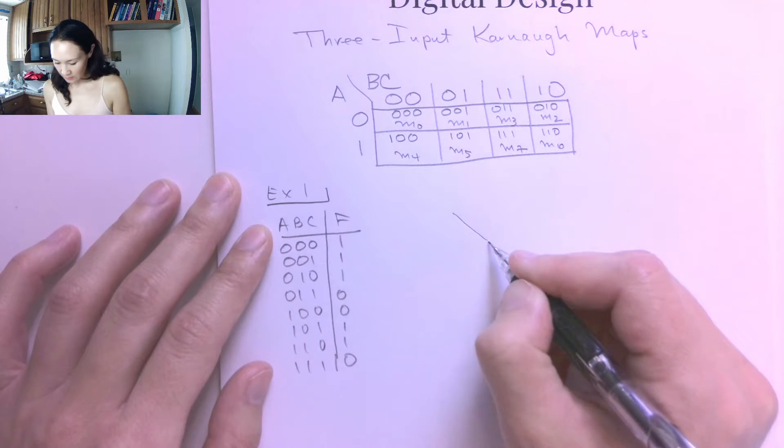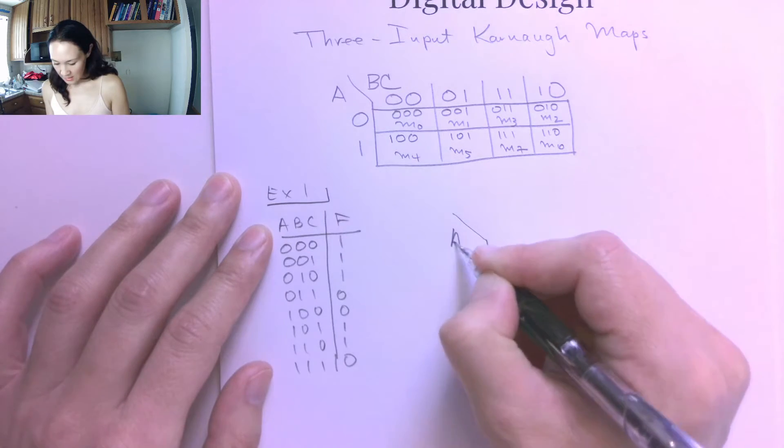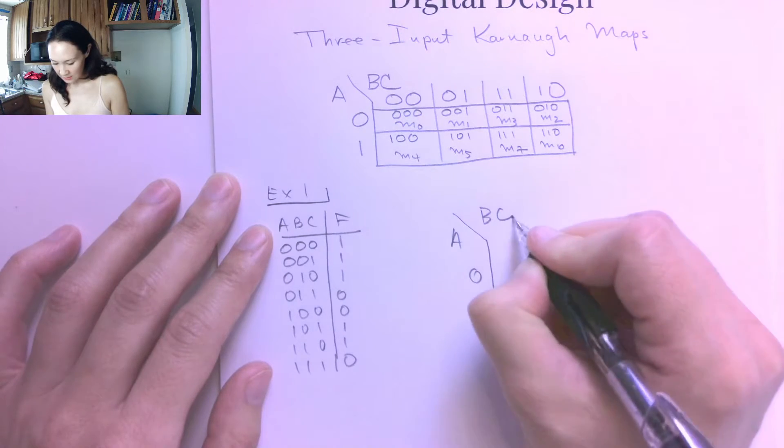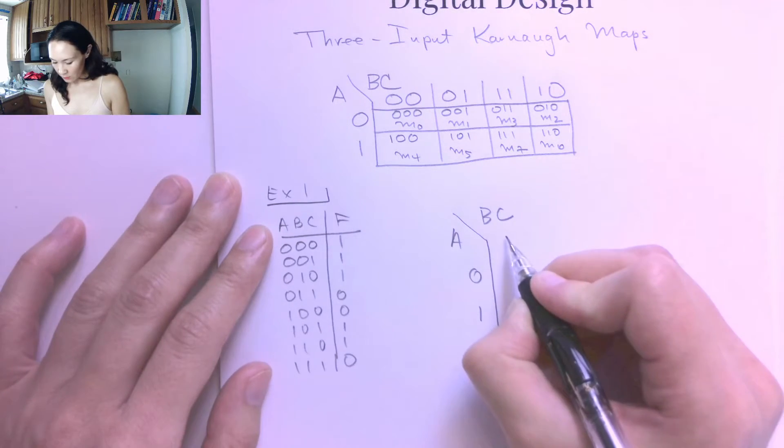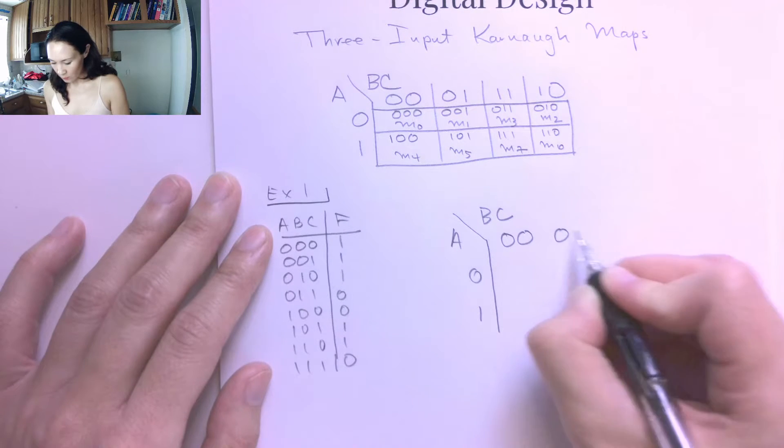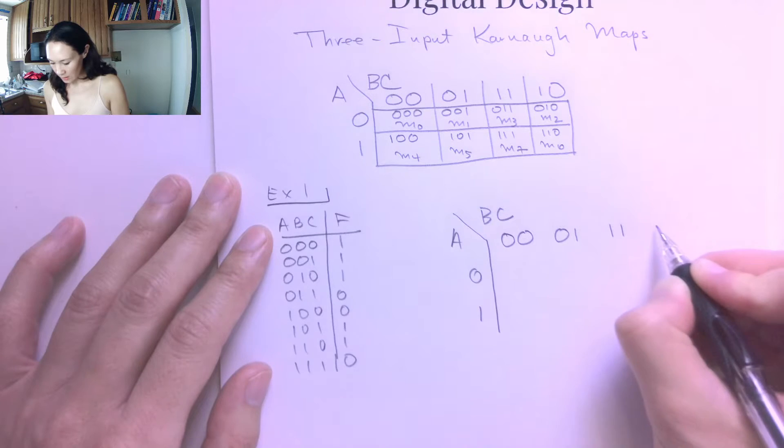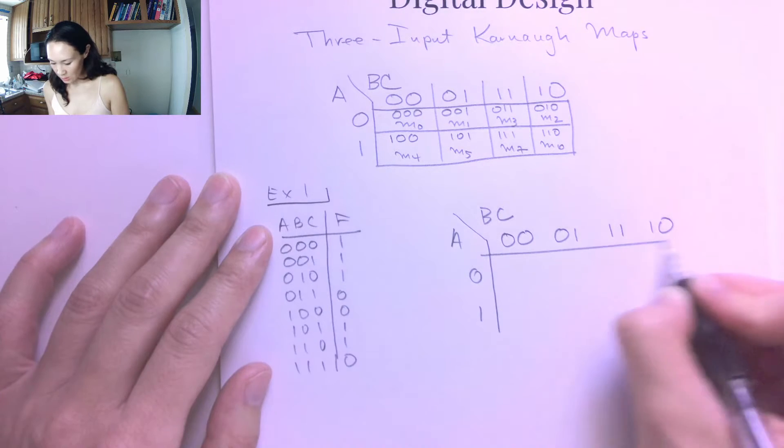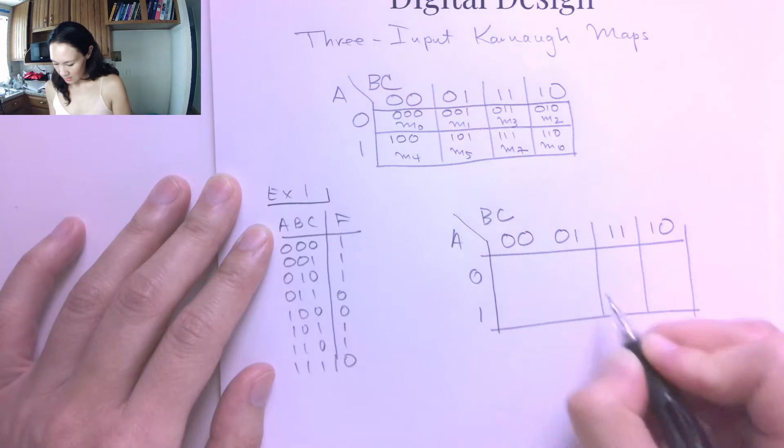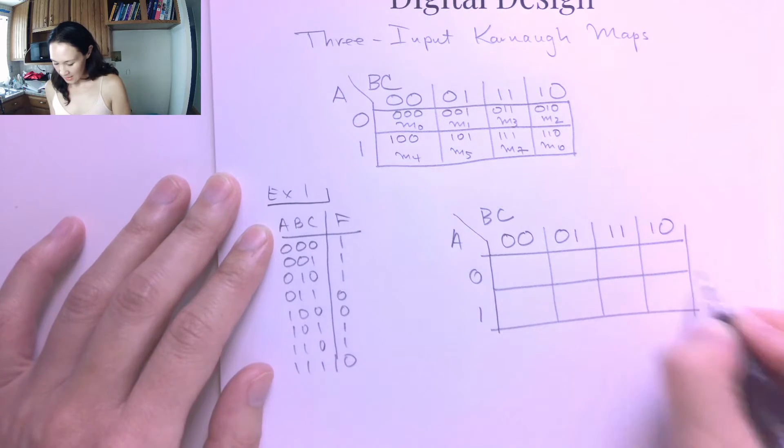I'm going to construct my Karnaugh map with A here. A is either 0 or 1 and then I have B and C up on the top and our possibilities for B and C are 0, 0, 0, 1.